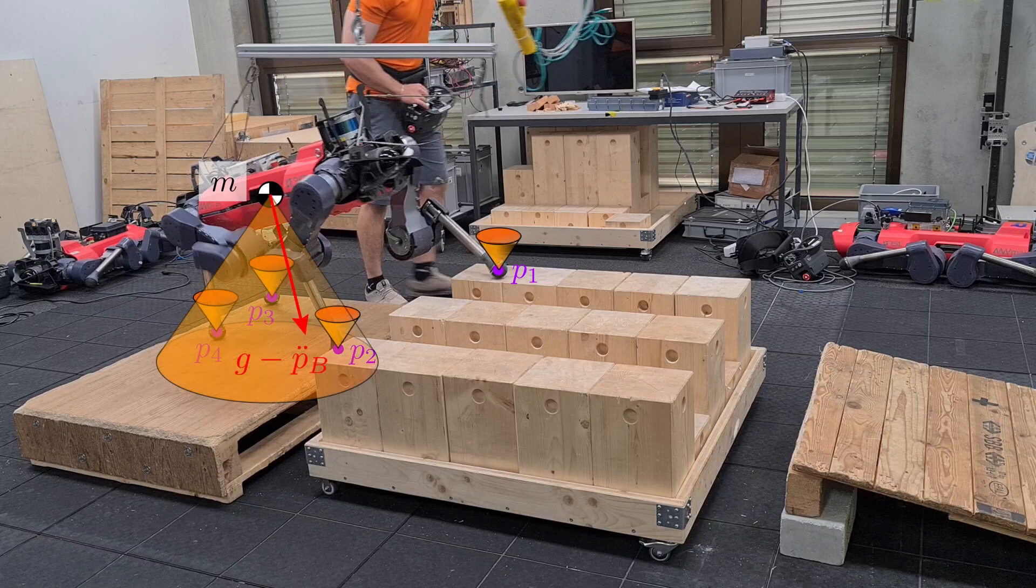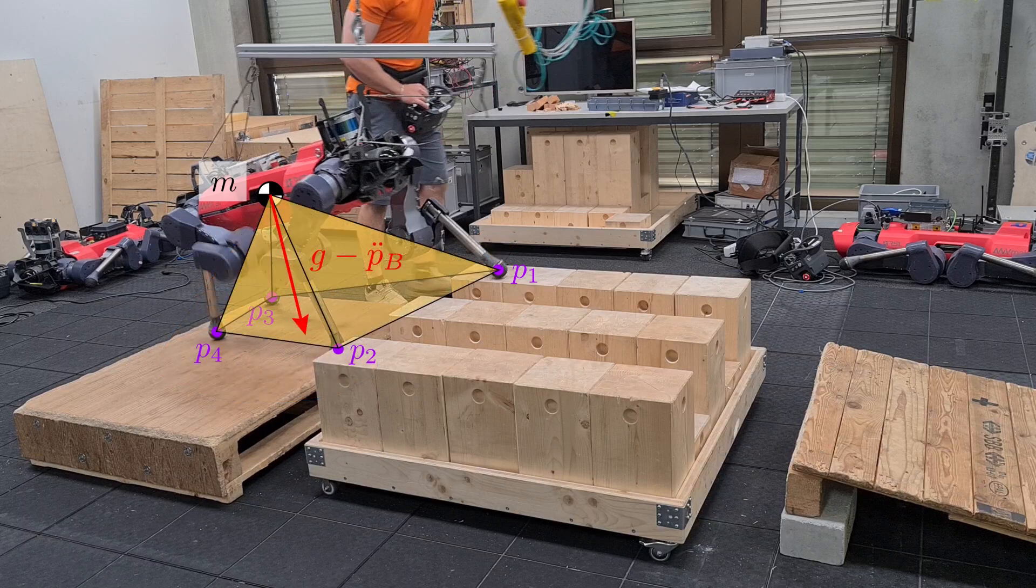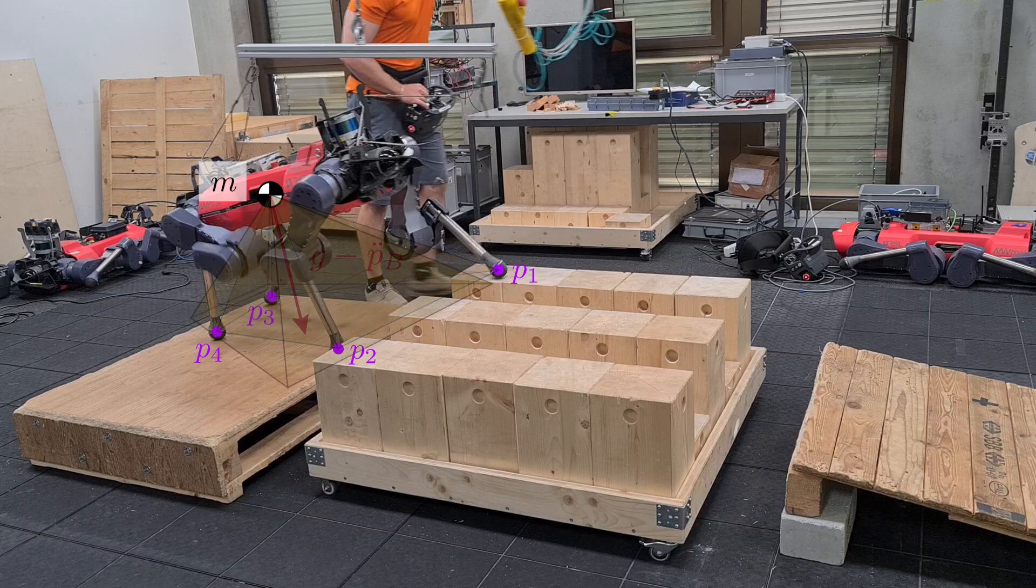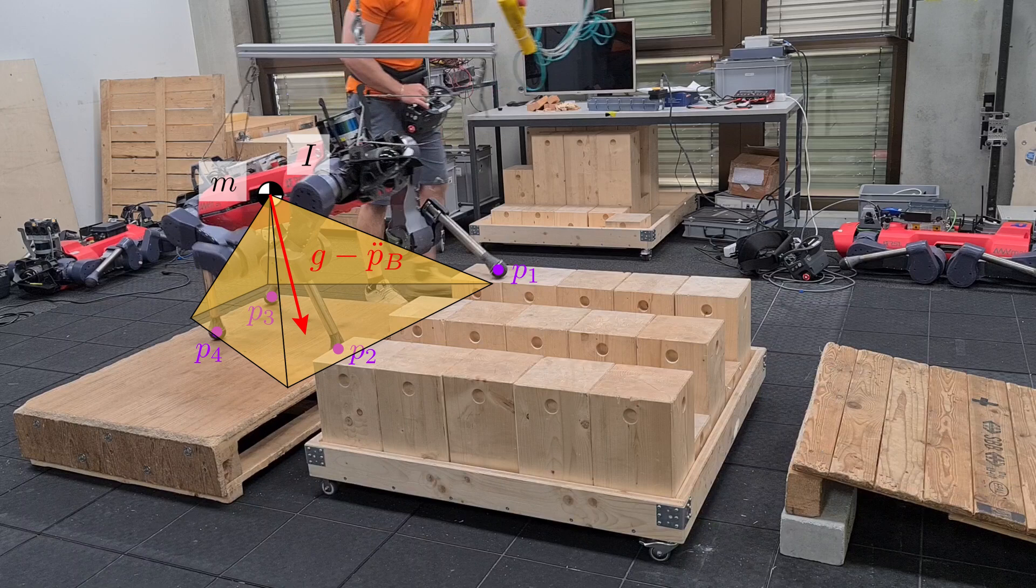The gravitoinertial acceleration vector must be contained in the convex hull of friction cones. This vector is further constrained to a support cone, spanned by the center of mass and rounded feet. A non-zero angular momentum derivative changes the shape and size of this cone.